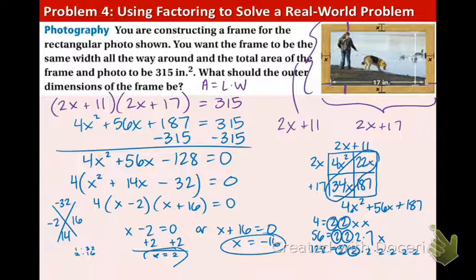Now, last thing. Does it make sense to have a negative value for x if it's a photograph and a frame? The answer is no. The only reasonable solution is 2 because it's positive. So, to figure out the dimensions of this frame, you just plug in the 2 for the original length and width that we found in the purple on the top right and then that will be the last thing we do. So, now I'll show you how to do that and we will be done.